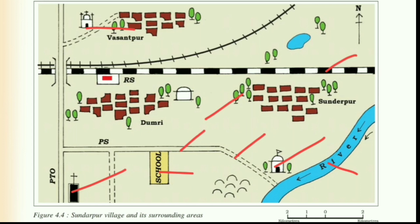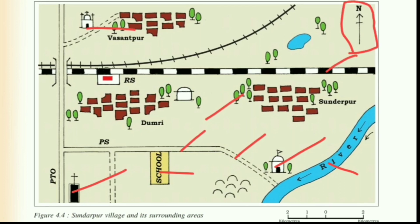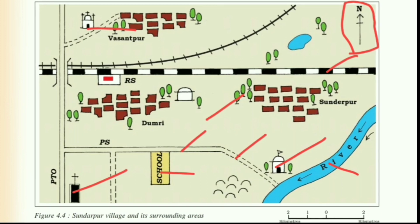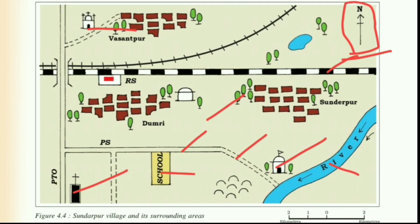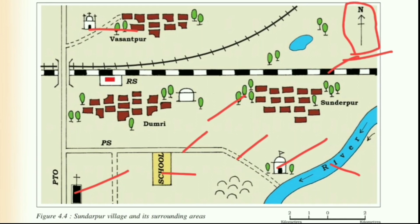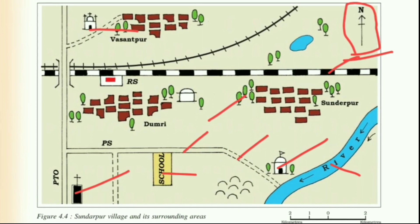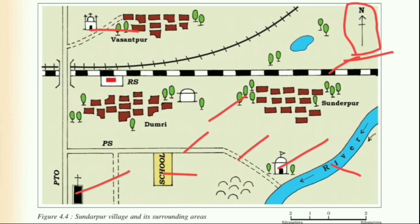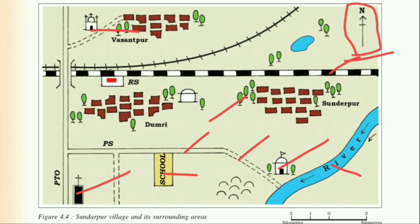Here again we can see an arrow marked with the letter N, indicating the north direction — called the north line. As already mentioned, if we know one direction we can estimate the other directions.